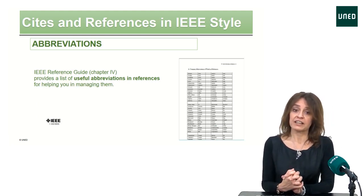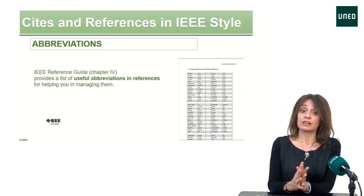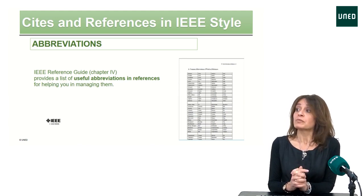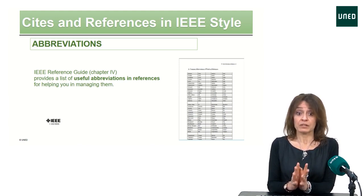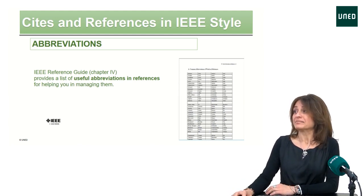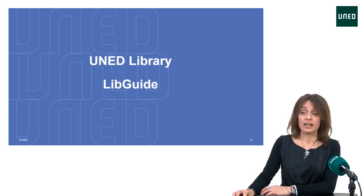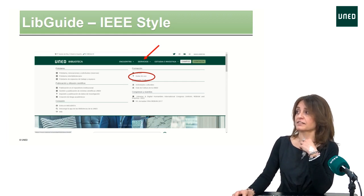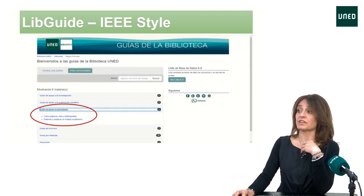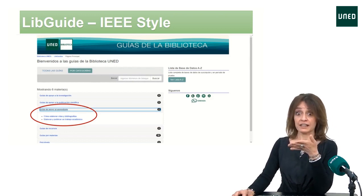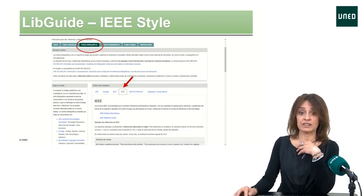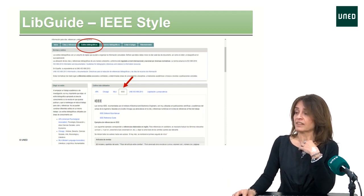For citing and making references in IEEE style, as you have seen, the use of abbreviations is common, but the reference guide in Chapter 4 provides a list of useful abbreviations in references to help you manage them, so don't worry. In the UNED library, there is also a live guide to help you consult examples in different styles. You go to the library website, navigate to the LibGuide following these steps, then to the corresponding section, and here you will find different styles including IEEE for you to consult examples.